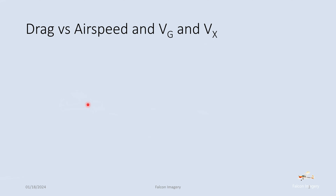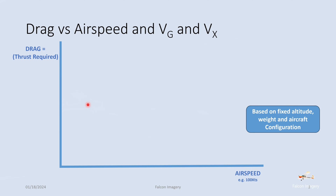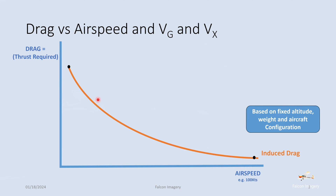Let's look at drag versus airspeed and VG and VX — best glide and best angle of climb. In this graph we have drag, which is equivalent to thrust required, versus airspeed. We're basing this on a fixed altitude with the same weight and aircraft configuration under all scenarios. First, induced drag: at very slow airspeeds, induced drag is high, but at higher airspeeds we have less drag. Induced drag is a function of lift, or basically angle of attack. At very slow airspeeds we have a high angle of attack, but as airspeed increases, angle of attack comes down, reducing induced drag. At max cruise speed — for example 100 knots — the angle of attack is minimal and induced drag is very limited.